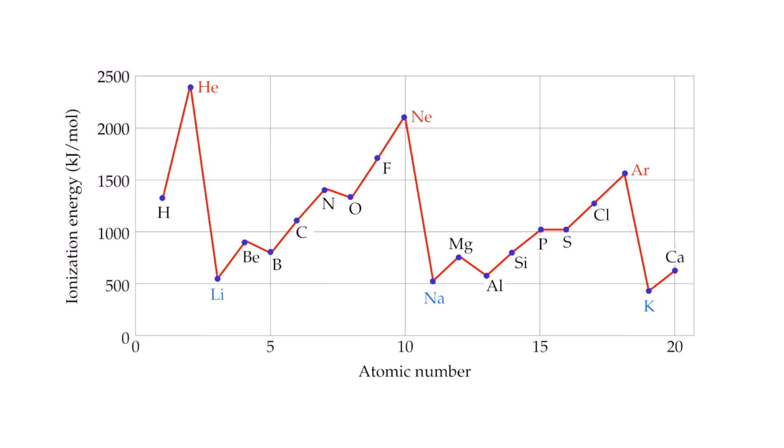There are just a couple exceptions to the ionization energy trend, but we can rationalize them. Look for example at the second row. From lithium to neon, the ionization energy should increase each time we add a proton to the nucleus and the radius contracts a little. But something like oxygen, which dips downwards from nitrogen's ionization energy, does so because of orbital symmetry.